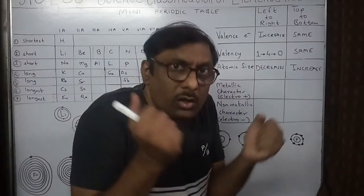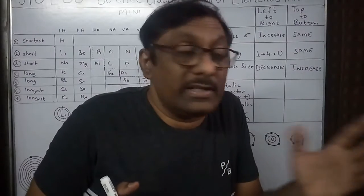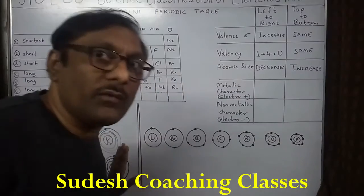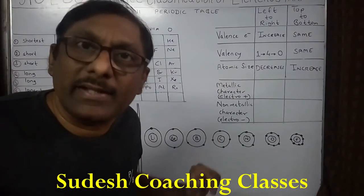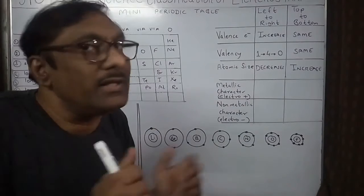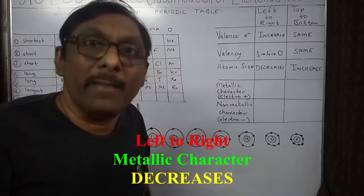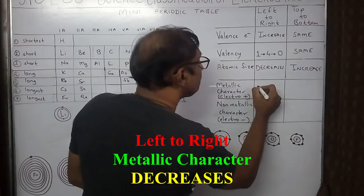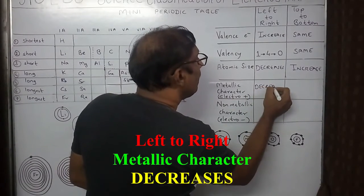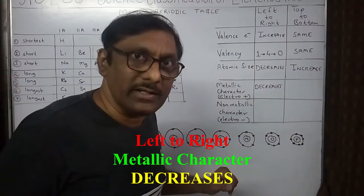As we go further right, elements are rarely giving electrons — they are not giving electrons at all. So as we go from left to right, the metallic character — the property of giving electrons — decreases. Metallic character decreases as we go from left to right.